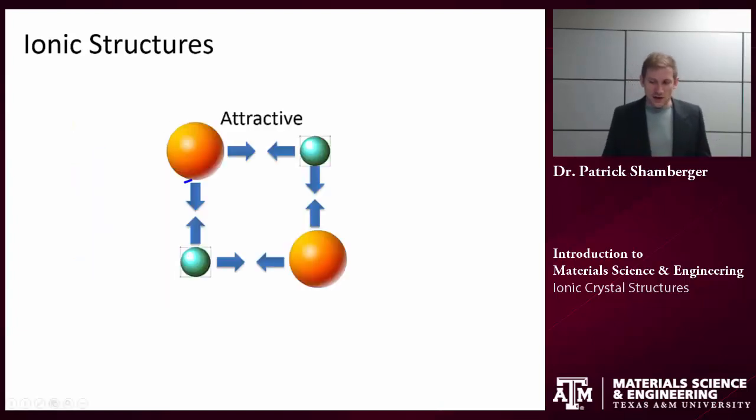We talked about ionic materials having at least two different kinds of particles. There are anions, negatively charged ions, and we have cations, positively charged ions. Typically, anions are going to be larger than cations because they have extra electrons, but that's not always the case.